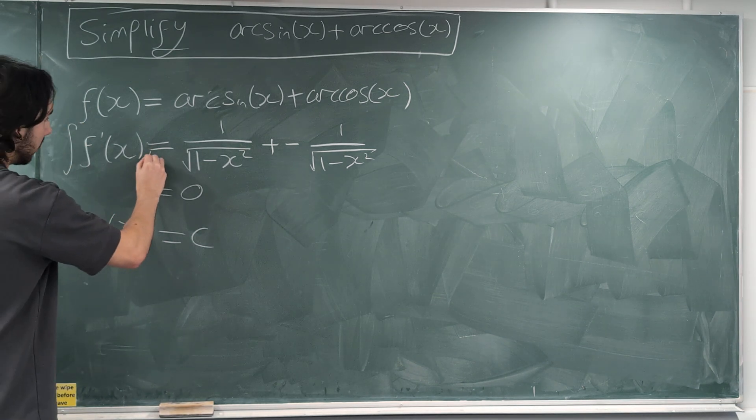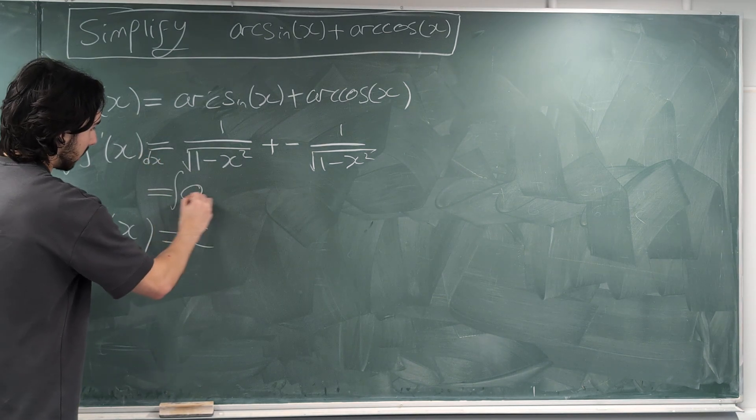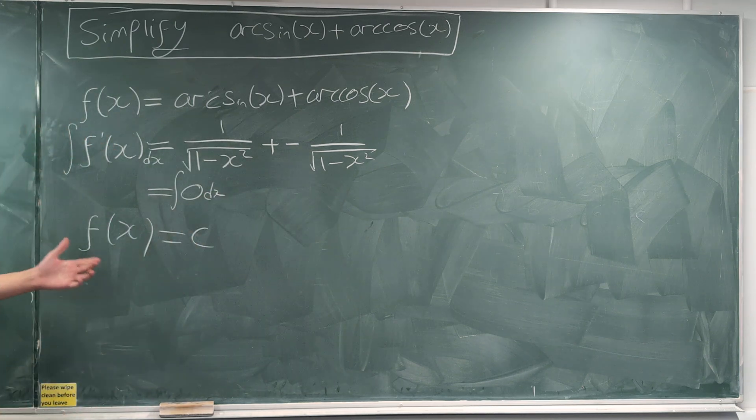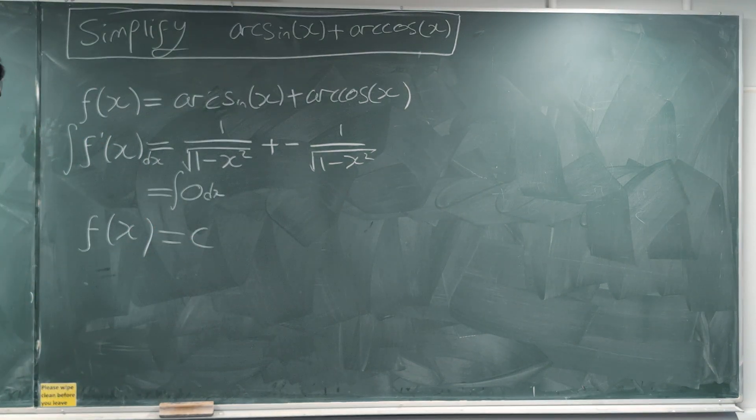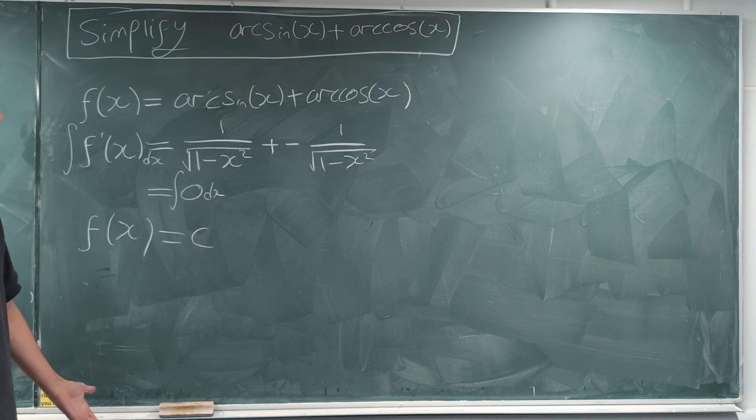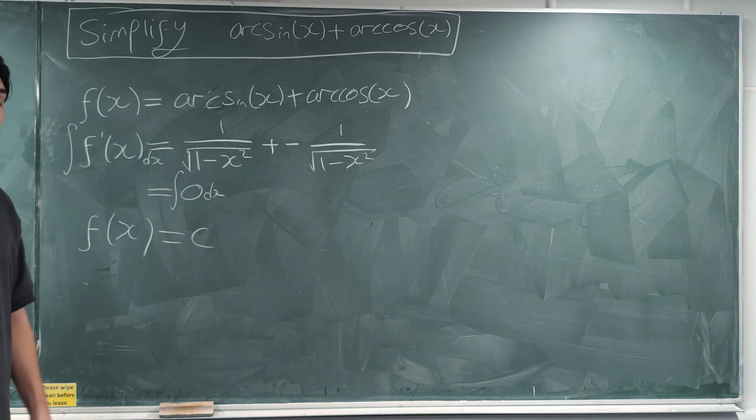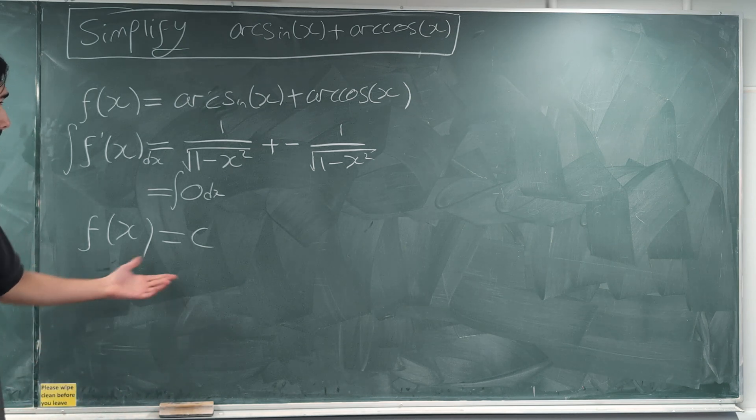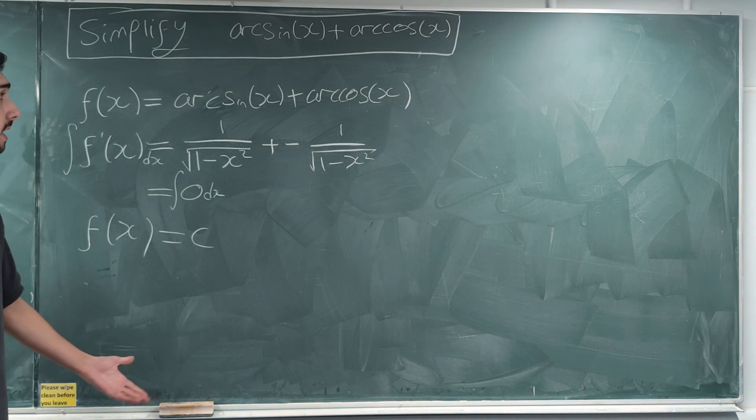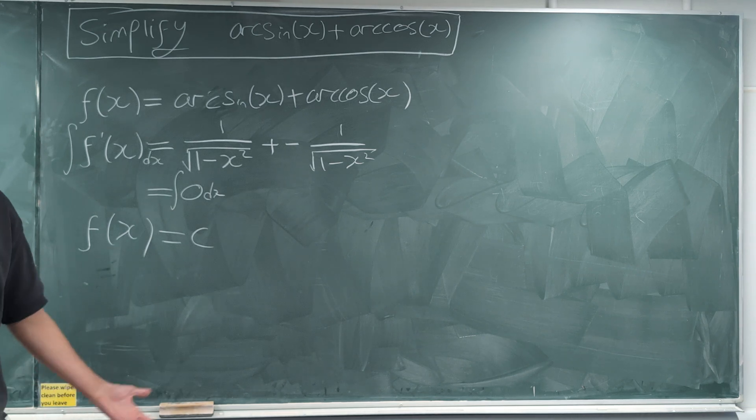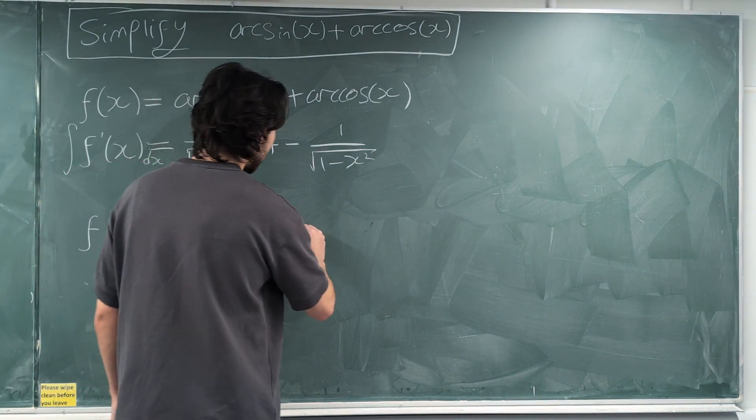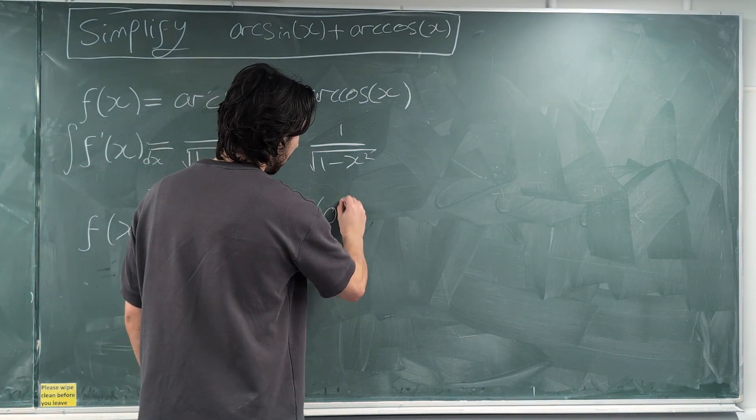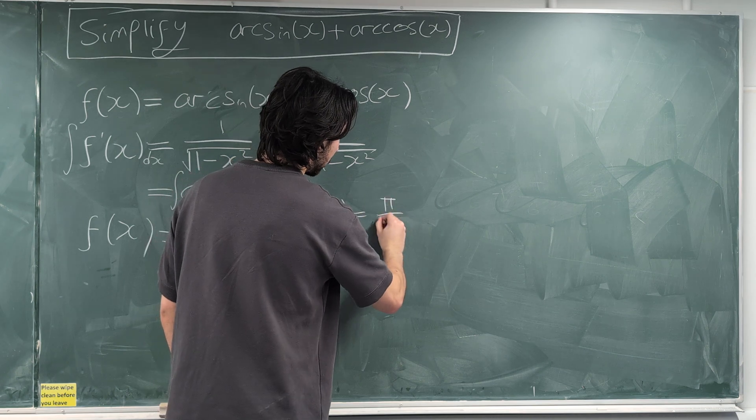If we were to do a cheeky little integral, ∫f'(x)dx equals the integral of 0 dx, we get that the original function is equal to a constant. Well, that means that we can plug in just any number and see what c is, right? How would you find, you know, if you're doing a differentiation or integration question, and you integrate both sides and you try and find c, what would you do? You just plug a number in, right? And again, we already know, for example, that f(0) was π/2.